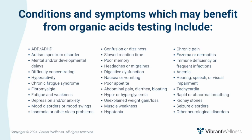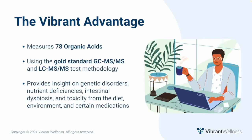In conclusion, the organic acids test measures 78 organic acids, providing insights in discovering underlying causes of chronic symptoms such as fatigue, muscle weakness, confusion, poor memory, digestive dysfunction, eczema, and hearing, speech, or visual impairment. By measuring your patient's organic acid levels using gold standard methodology, you can accurately identify conditions associated with genetic disorders, nutrient deficiencies, intestinal dysbiosis, and toxicity from the diet, environment, and certain medications, allowing you to craft personalized protocols to get your patients feeling better fast.